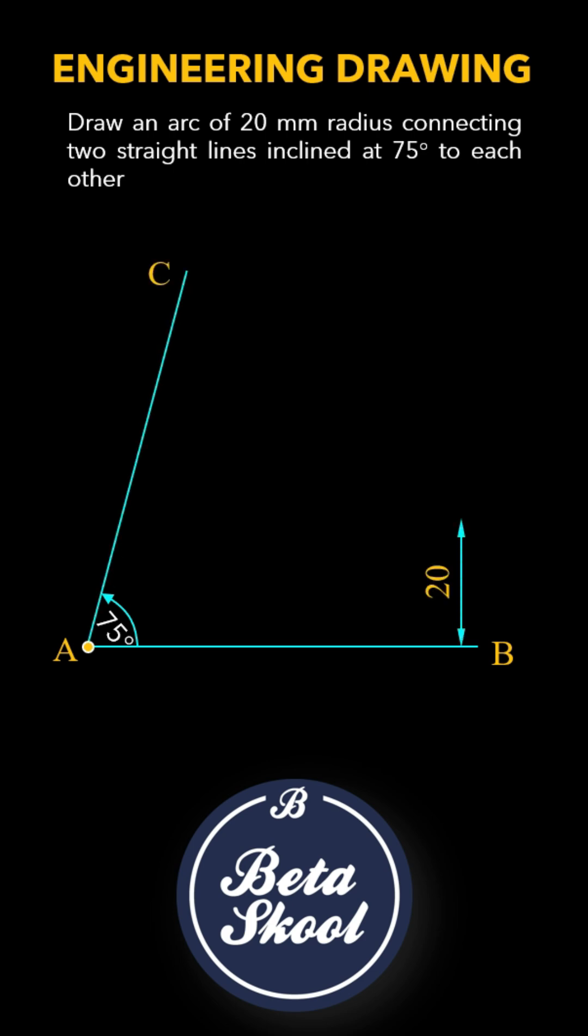Now, 20mm away from AB, draw another line PQ parallel to it. Draw another line RS 20mm away from AC. Where these two lines meet, mark it O.